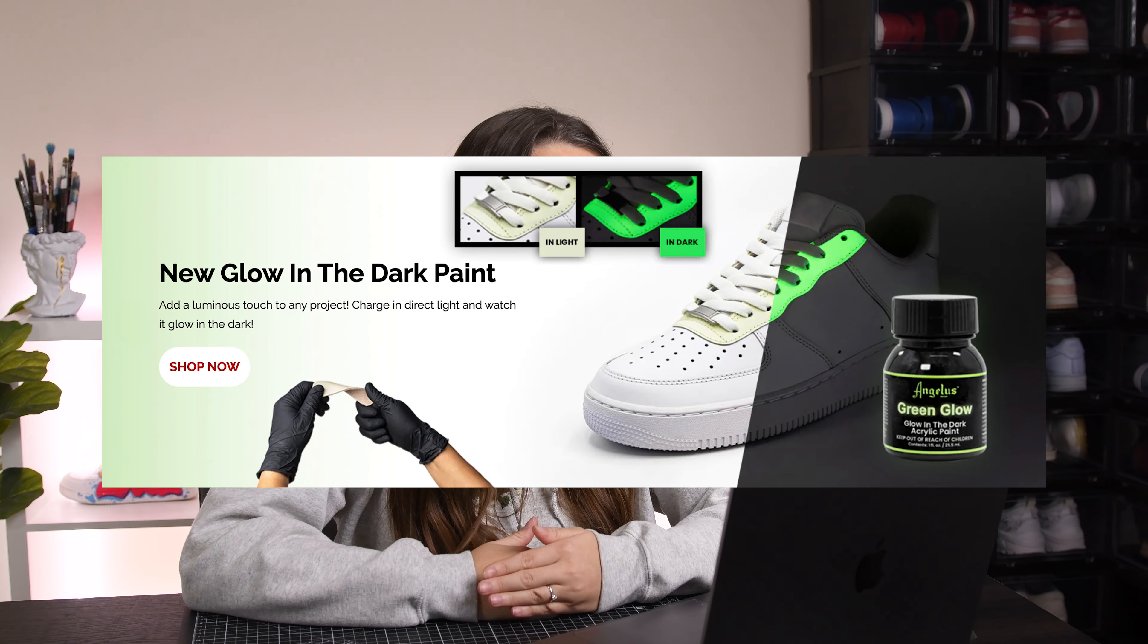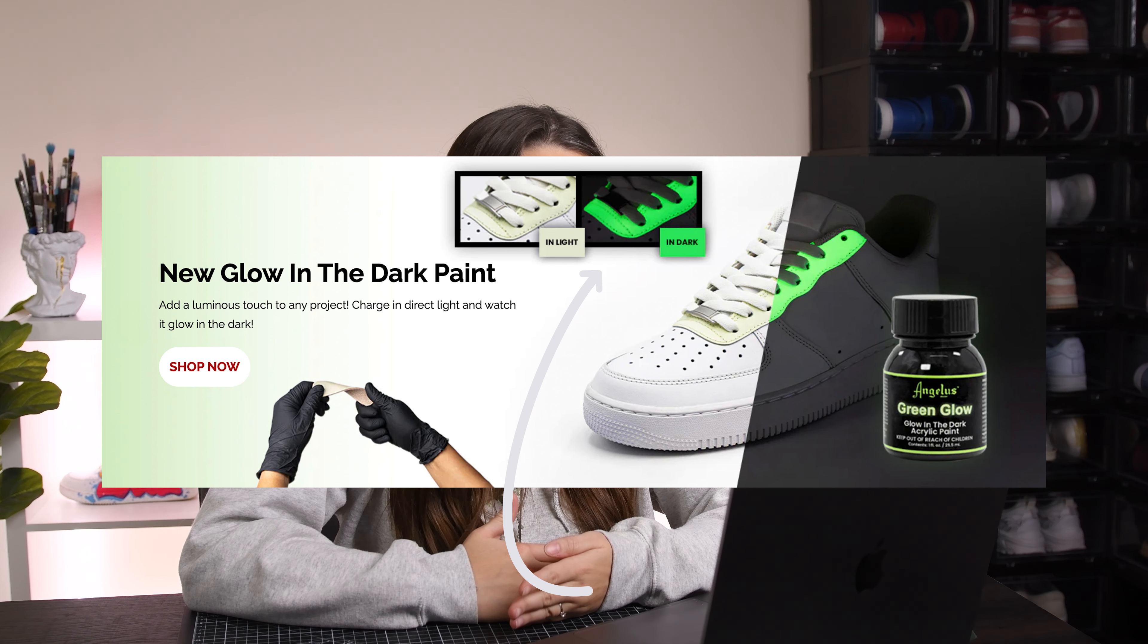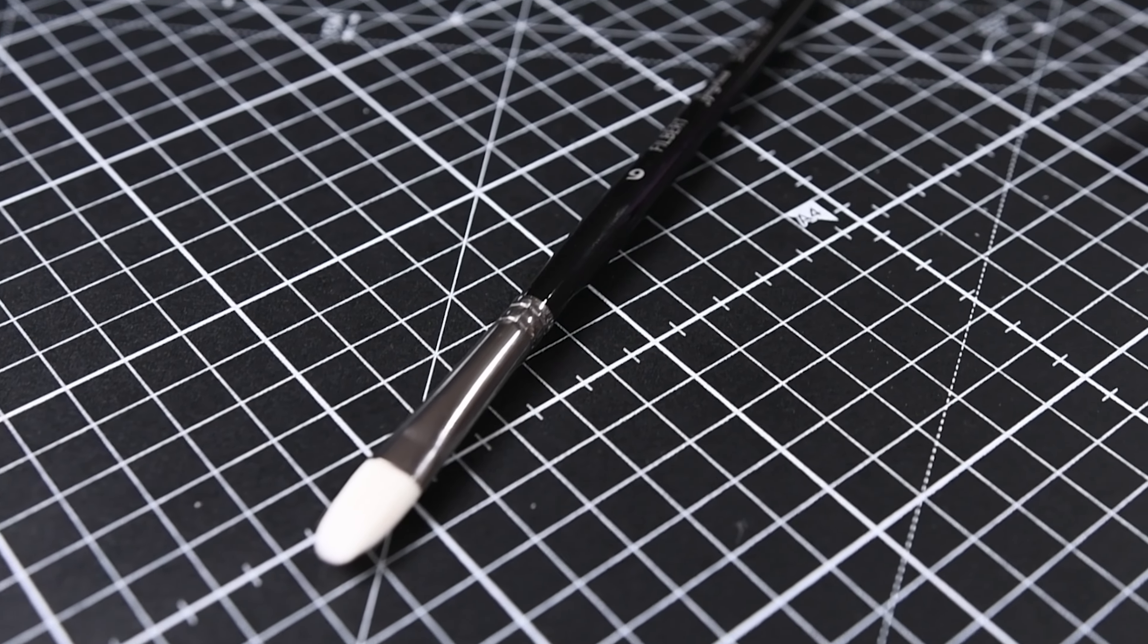In this promo pic on the website, you can see that in the light this paint has a nice subtle green look to it, and then obviously glows very bright green in the dark. According to the bottle, this paint is recommended to be applied with an airbrush, although technically you can use a paintbrush too.